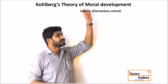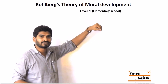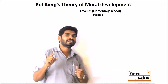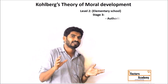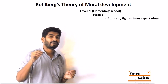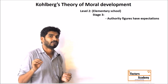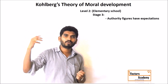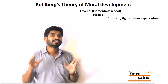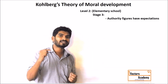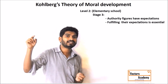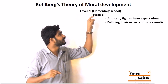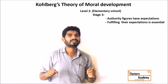Once level one is done, comes level two, with stage three and stage four. This is actually where the mind evolves. In stage three, the mind starts thinking that authority figures — teachers or parents, people who have influence on them — have expectations. They think that these authority figures expect something from them and they try to fulfill those expectations. Students realize it is very essential to satisfy the needs of their authority figures.